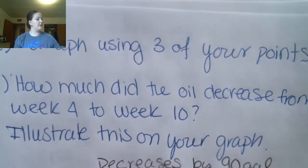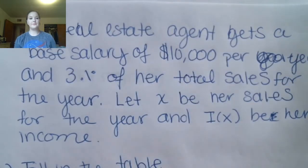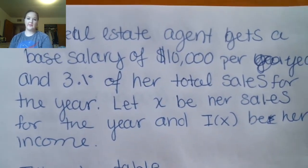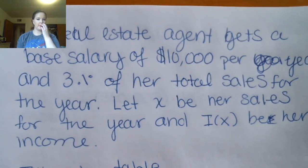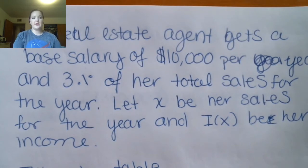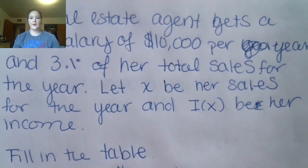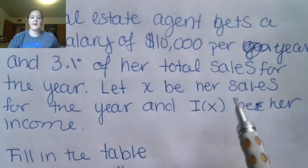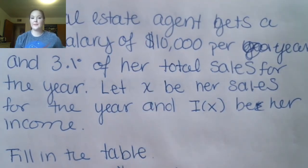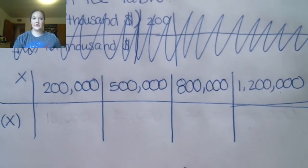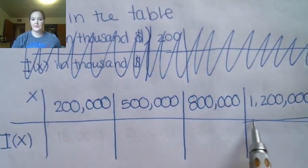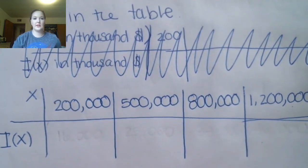Let's look at another example. A real estate agent gets a base salary of $10,000 per year and 3% of her total sales for the year. Let x be her sales for the year and I of x be her income. Again, this is showing us that x is the input value and I of x is the output value. Part A says fill in the table — they've given you some input values and you're supposed to fill in the output values. Go ahead and pause the video and fill these out.